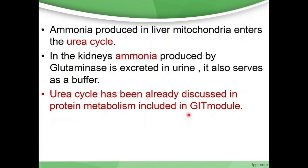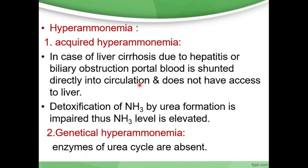In the case of liver cirrhosis, due to hepatitis or biliary obstruction, portal blood is shunted directly into circulation and does not have access to the liver. Detoxification of ammonia by urea formation is impaired, and thus the ammonia level is elevated. This is an acquired condition — it is due to liver cirrhosis, where ammonia detoxification does not take place and ammonia levels are elevated.